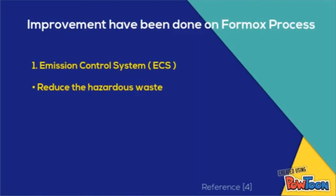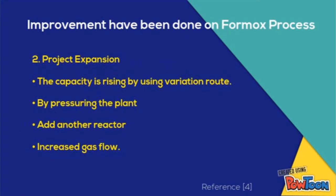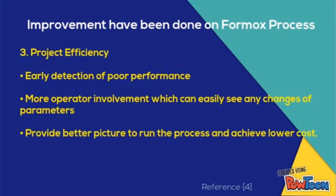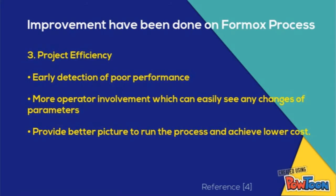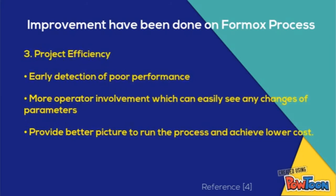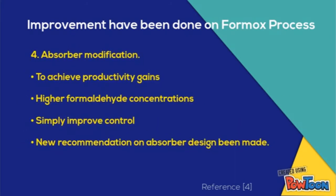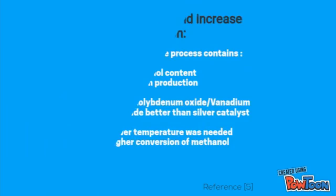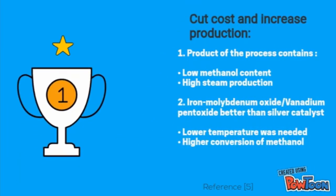There are a few improvements that have been done on the Formox process: first, emission control system (ECS); second, project expansion; third, project efficiency; fourth, absorber modification to cut cost and increase production. The product of the process must contain low methanol content and high steam production.